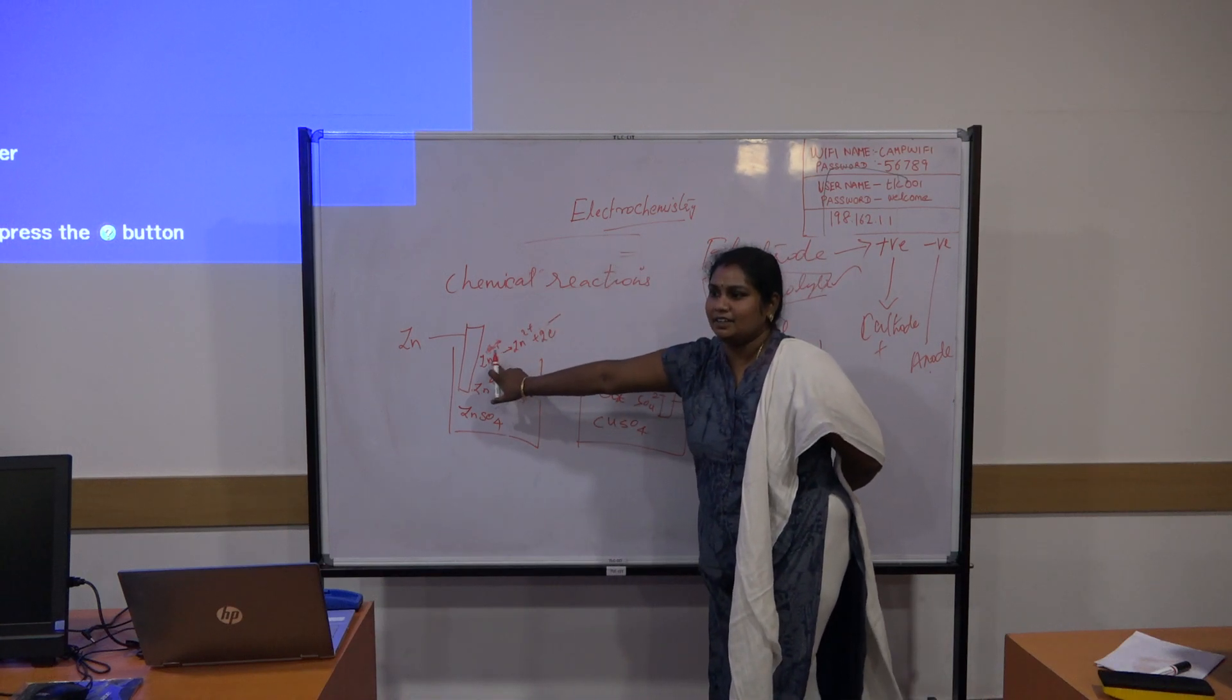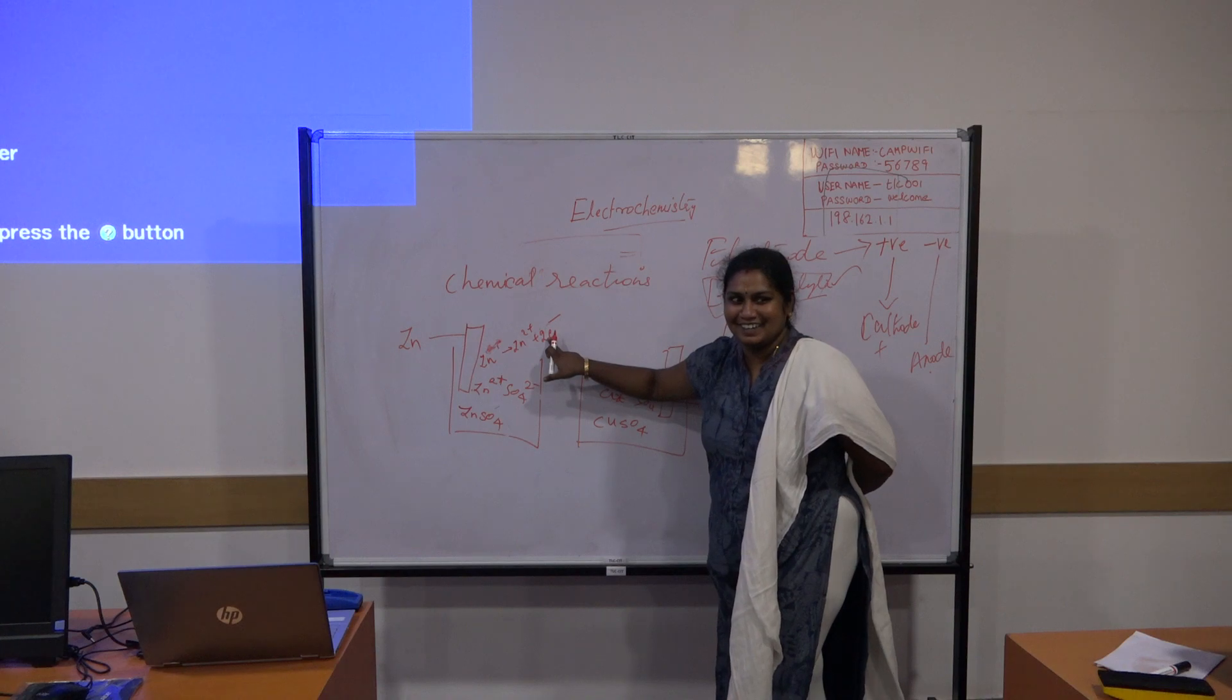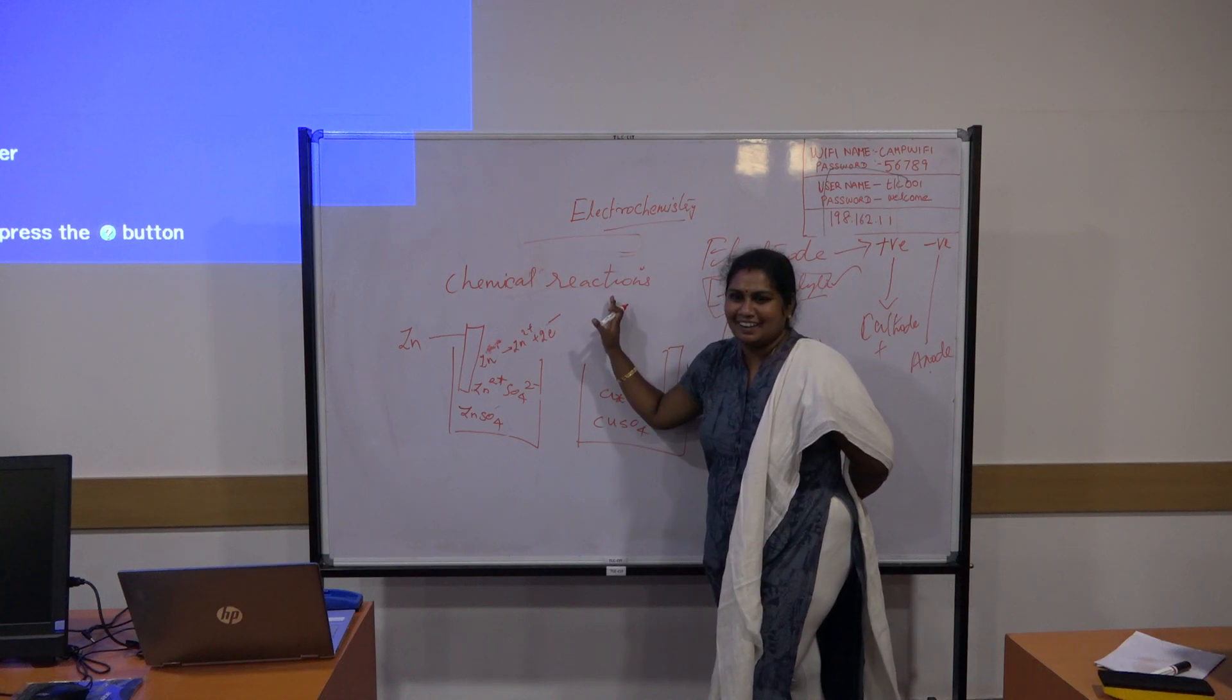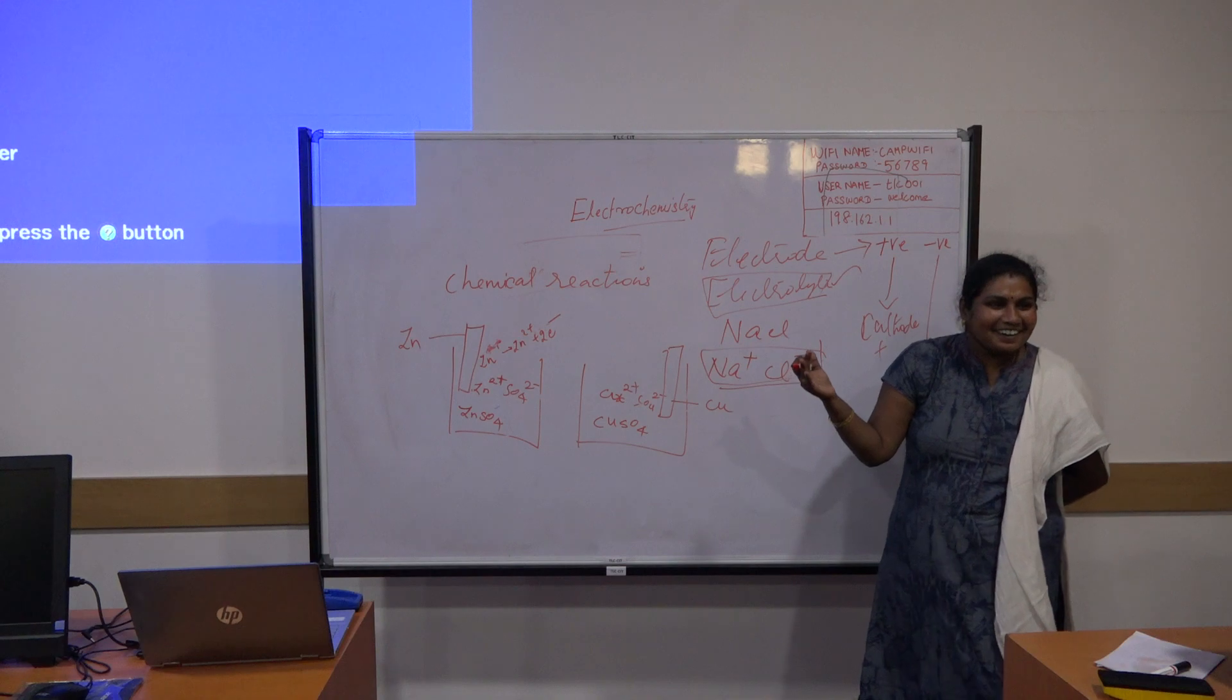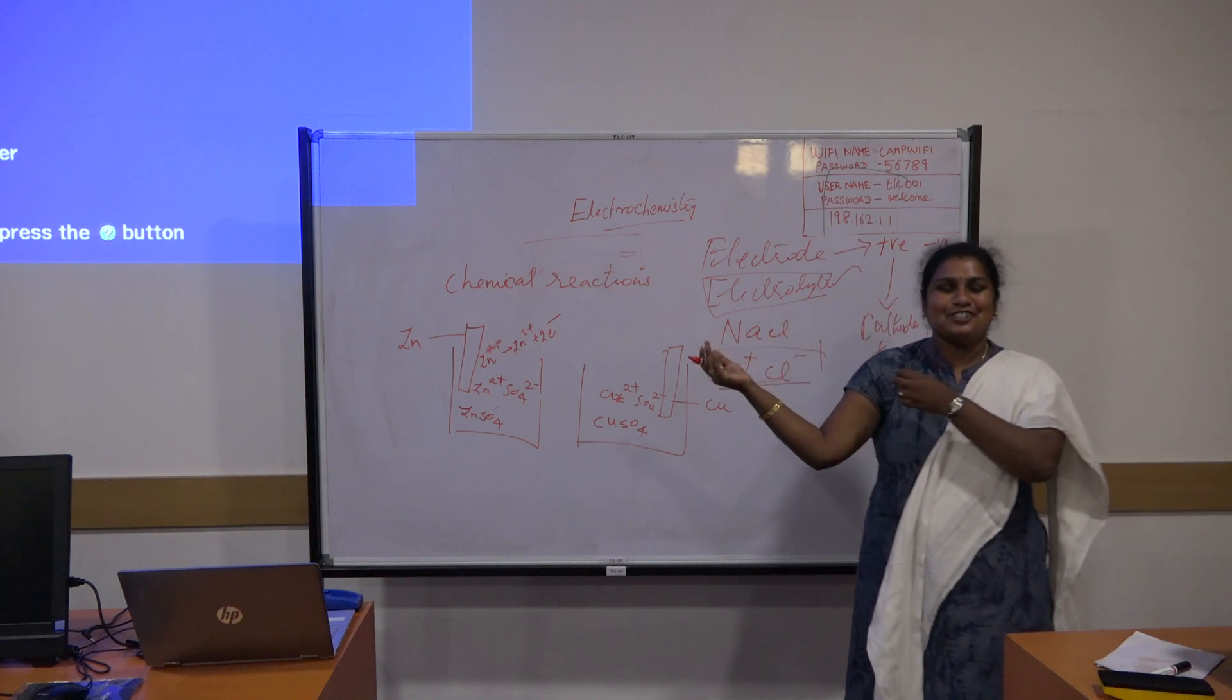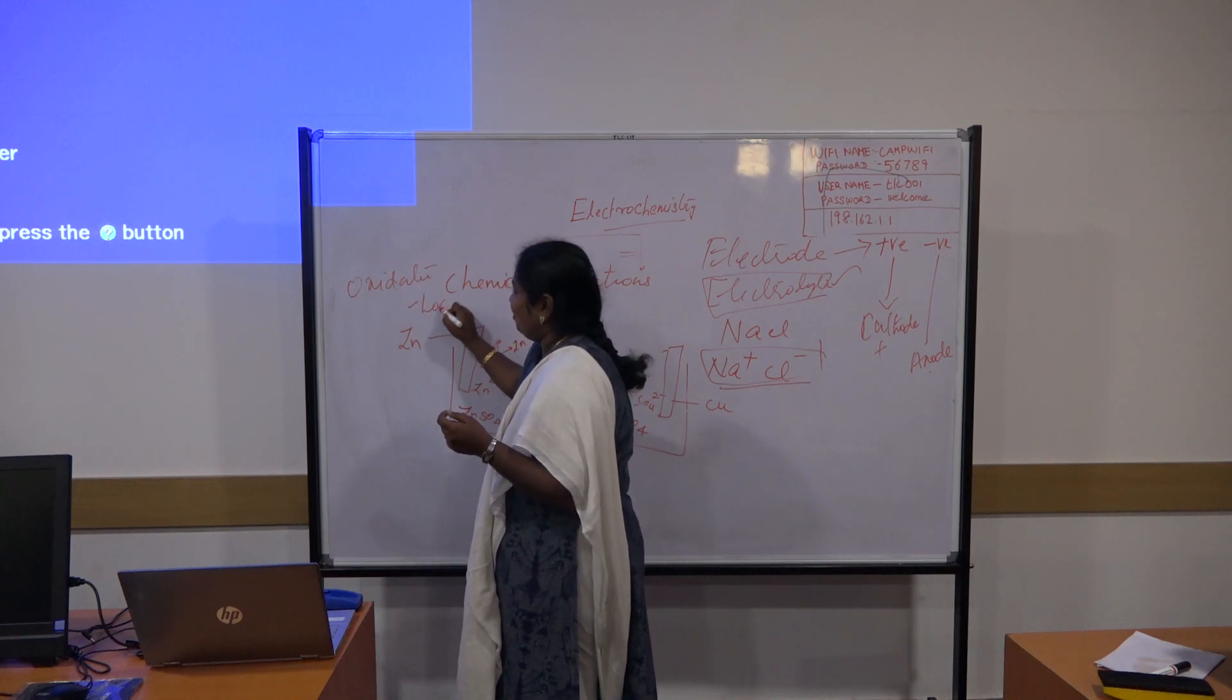So, what is taking place here in zinc metal? Chemical reaction. Yeah, chemical reaction of course. Zinc goes to zinc 2 plus plus 2 electrons. What is it? What does it indicate? Two electrons is losing. Loss of electrons. Loss of electrons. So, potential difference? Potential difference. Electricity is generated. Yeah, of course oxidation. Oxidation is taking place here. Oxidation. Loss of electrons.